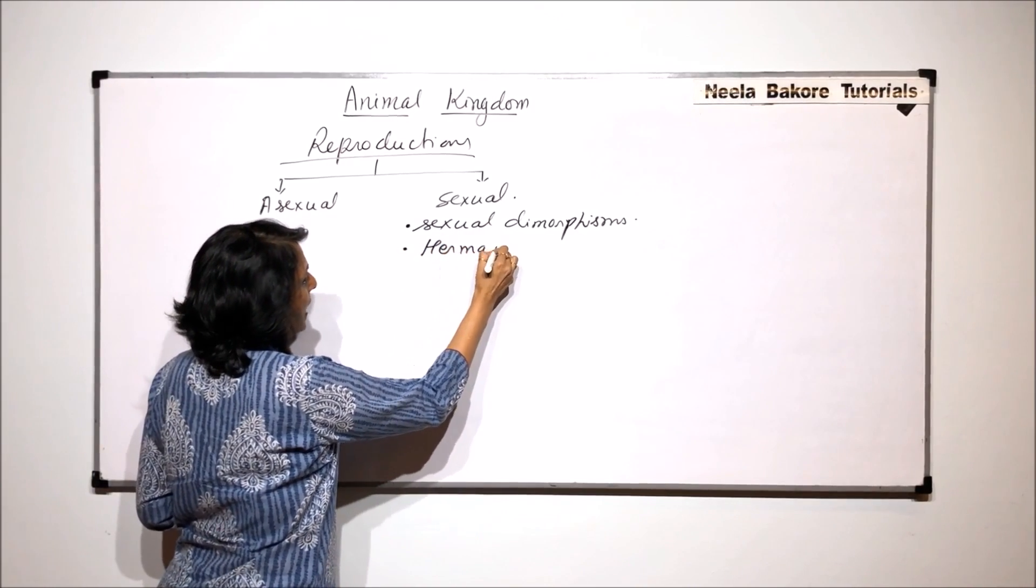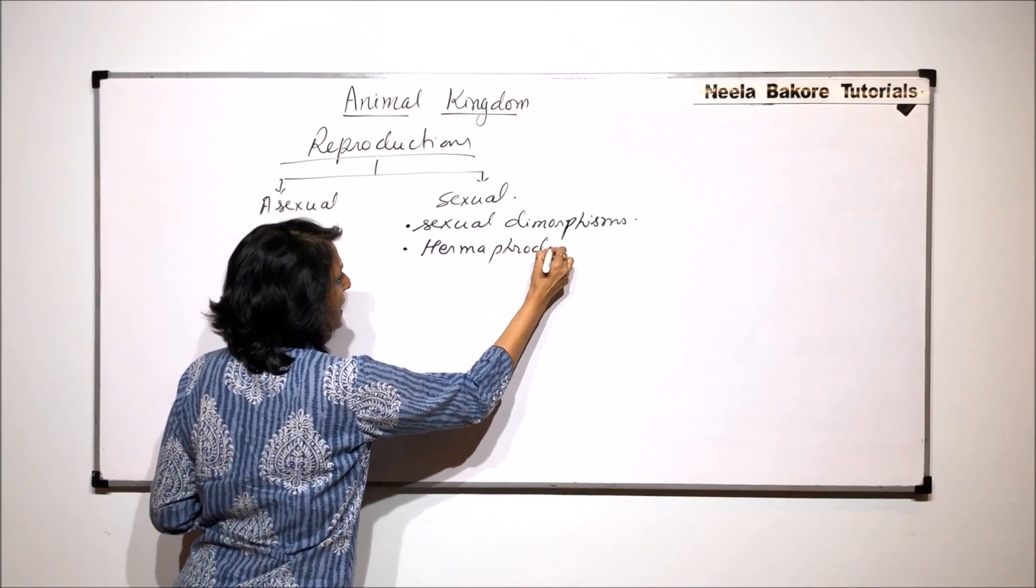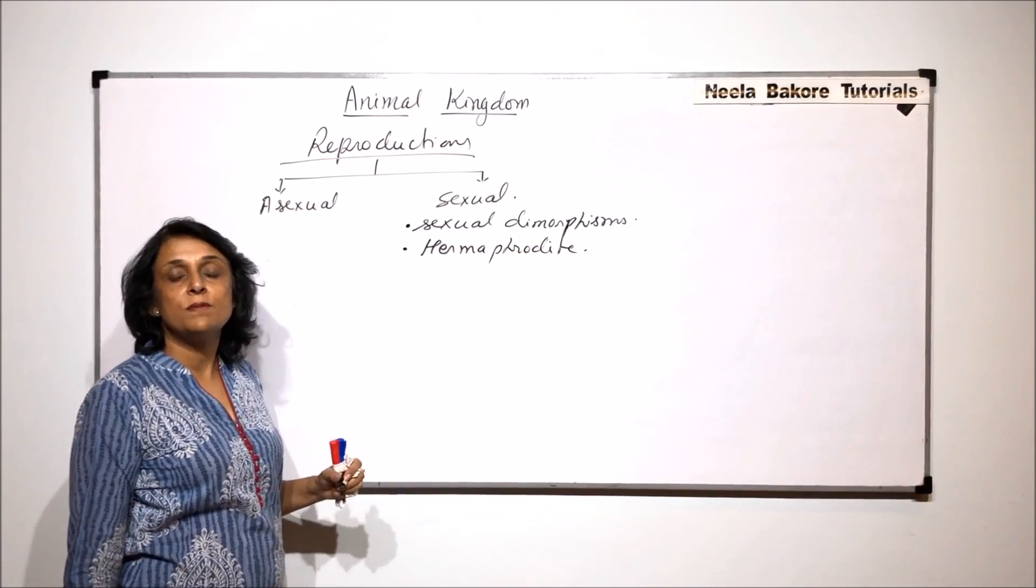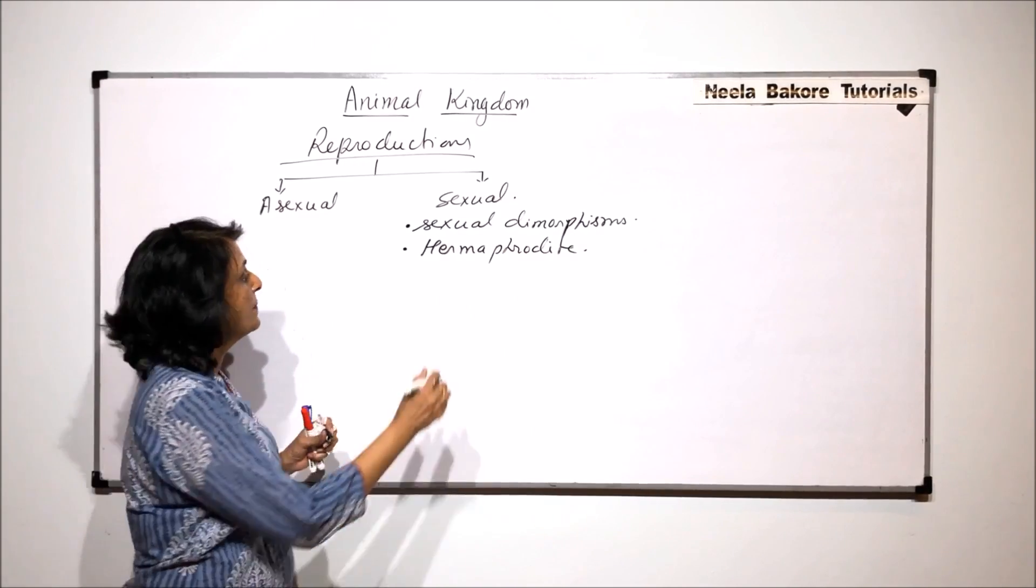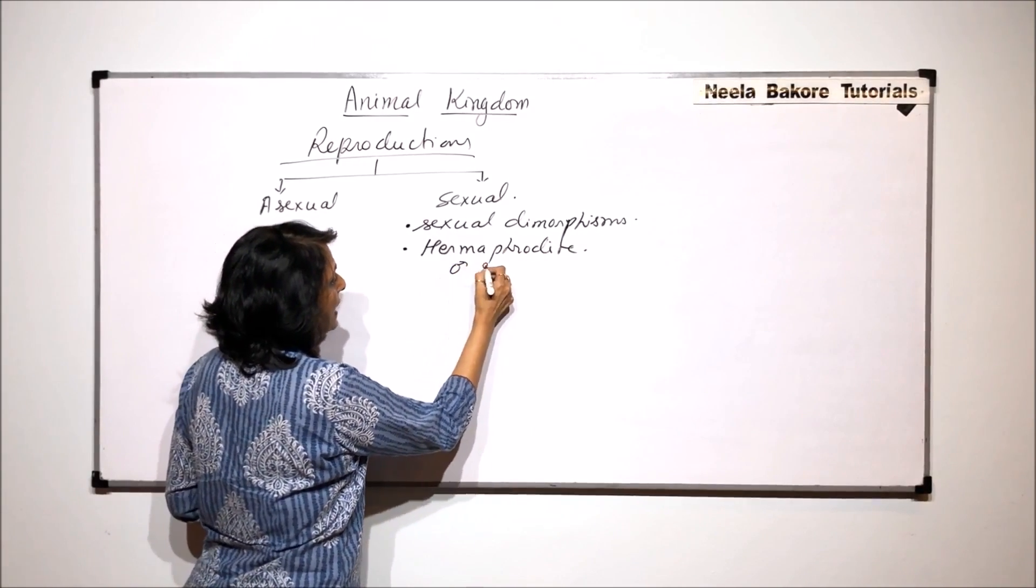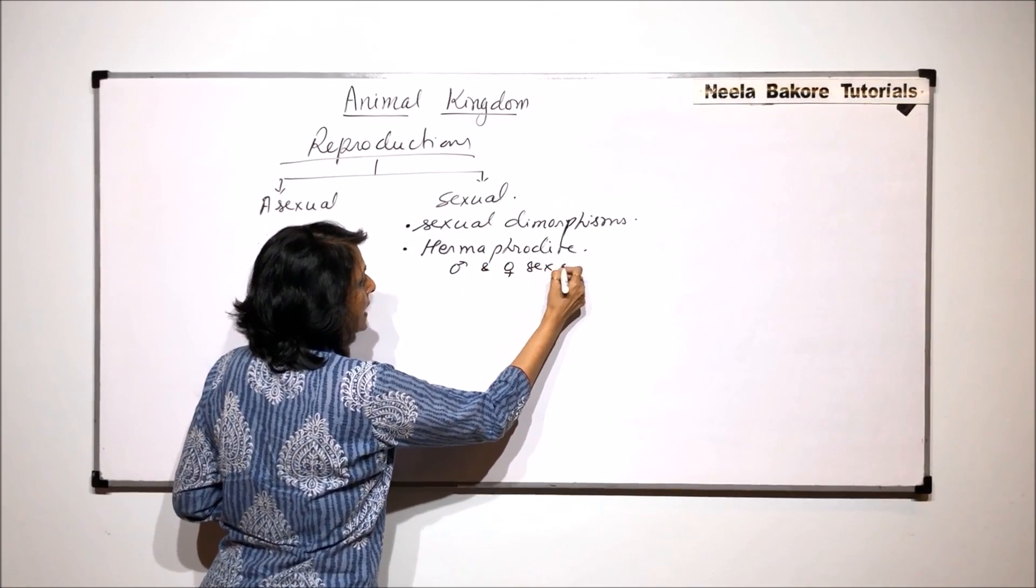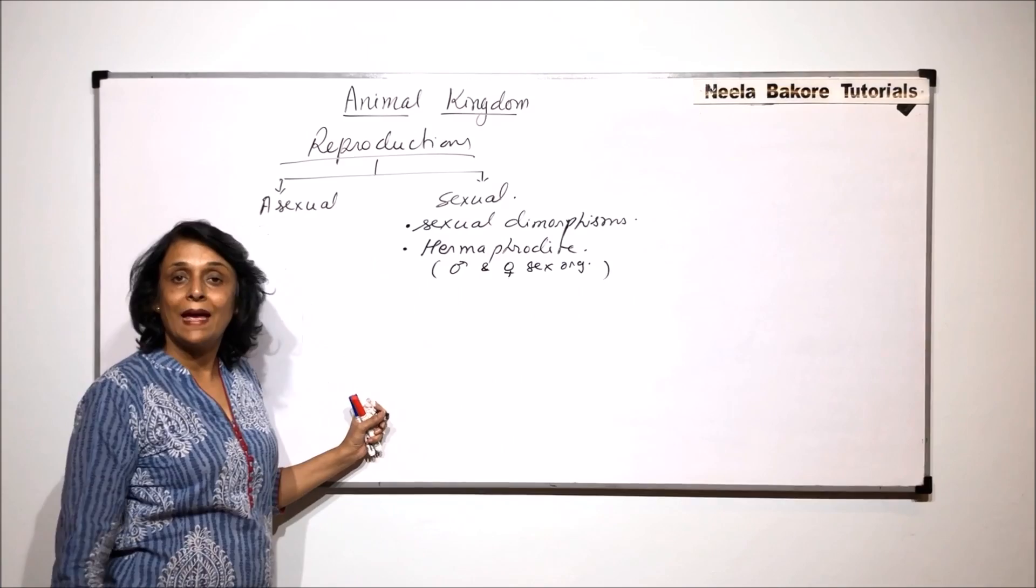The other possibility is that the animals are hermaphrodite. Hermaphrodite means one organism is going to have both male and female sex organs, both are present in the same animal.